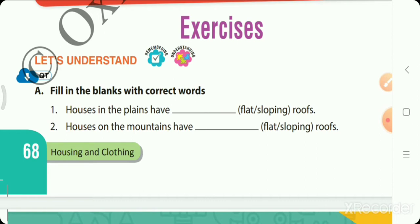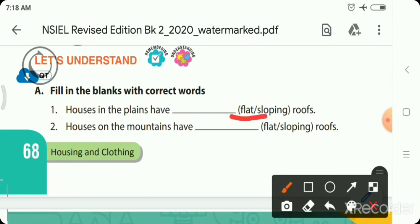Houses in the plains have blank roofs - plains make roofs flat or sloping? Plains have flat roofs, right? Houses of the mountains - what kind of roof? In the mountains, the roofs are obviously sloping.